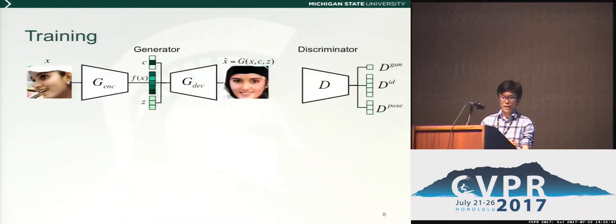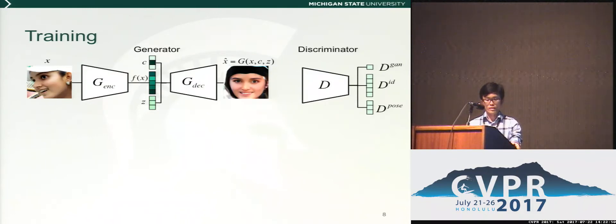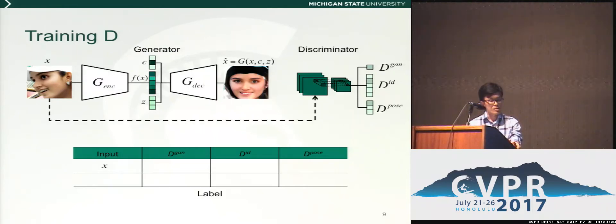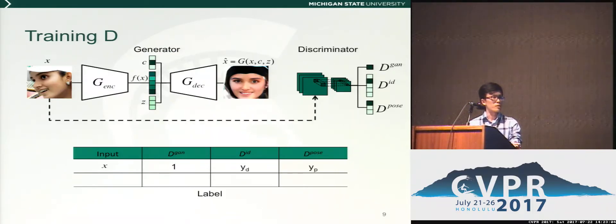For training, the IDEA GAN follows an alternating training schedule between the generator and discriminator, as in conventional GANs. When training the discriminator, the discriminator expects to classify the input correctly. When the input is a real image, the discriminator will try to classify it as real with label 1, and also correctly classify the identity and the pose.